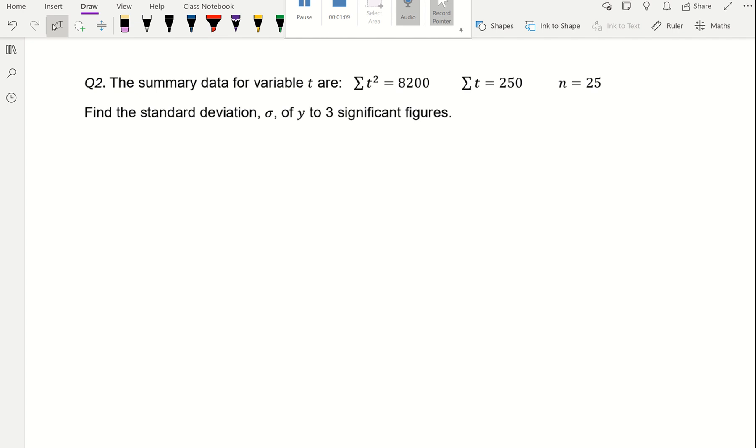This question says the summary data for the variable t are the sum of t squared, the sum of t, and the total frequency. Find the standard deviation of y, well it should say for t, to three significant figures. The standard deviation is the square root of the sum of t squared divided by the total frequency minus the mean squared, so t bar is the mean.